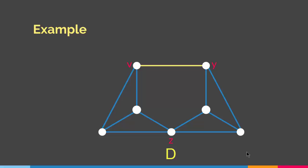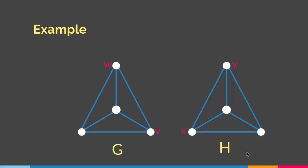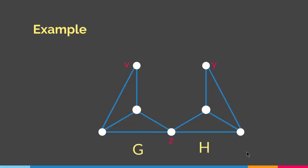So to recap what we did to create this new graph: we take graphs G and H, delete the two edges VW and XY, combine vertices V and X together to create a new vertex, and add a new edge between W and Y. This is basically Hajos Construction.